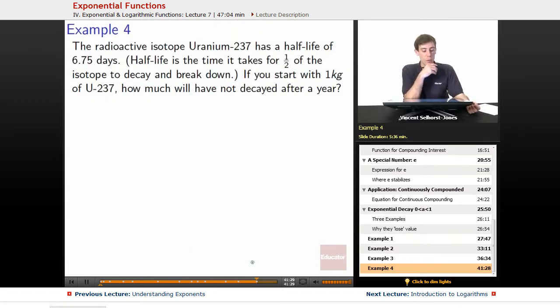Fourth example, final example. The radioactive isotope uranium-237 has a half-life of 6.75 days.